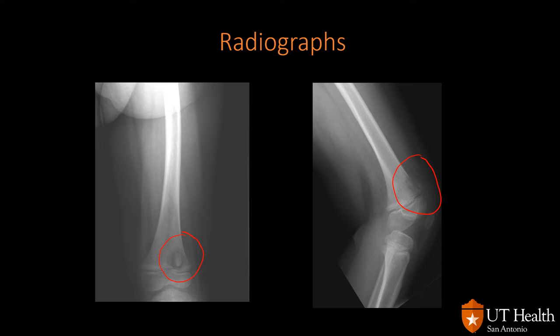Osteomyelitis is a benign process but has aggressive imaging findings, making it sometimes difficult to distinguish from a malignant lesion. Notice that the zone of transition is very wide with poorly defined borders — consistent with an aggressive lesion. On the lateral view there is cortical destruction and again a very wide zone of transition. Importantly, the growth plate acts as a barrier, so the infection does not cross into the epiphysis.